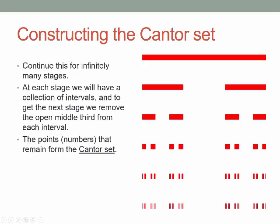Now we continue this process on and on and on — we do this for infinitely many stages. At each stage we have a certain number of closed line segments, we take out the open middle thirds, and that doubles the number of line segments. They're in very specific positions, not placed at random. At each stage we have a collection of intervals, and to get to the next stage we always remove the open middle third. The points that remain after doing that process infinitely many times — those points form the Cantor set.